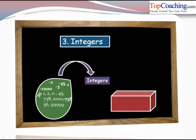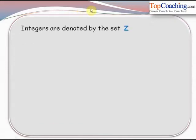So this is the basic difference between natural numbers, whole numbers, and integers. Now integers are denoted by the set Z. Now why are they denoted by the set Z? This we are going to see very shortly.